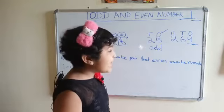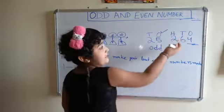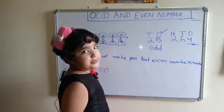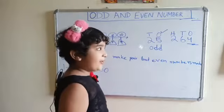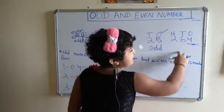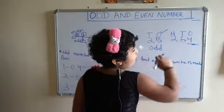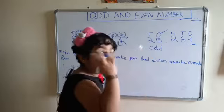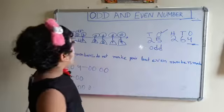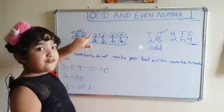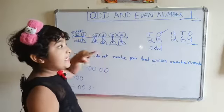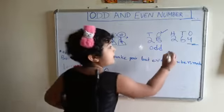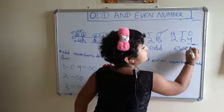Our next example is a 3-digit number. The ones place digit is 4. So this is an odd number.